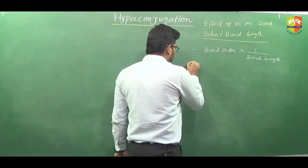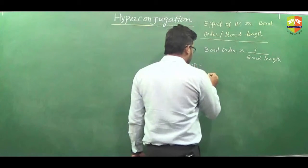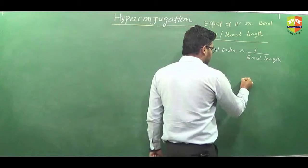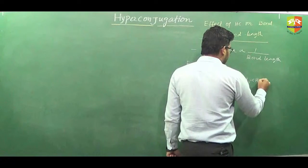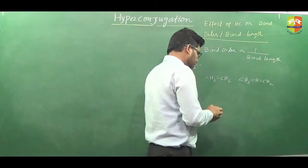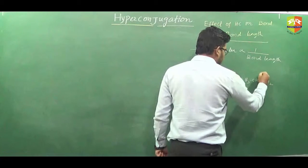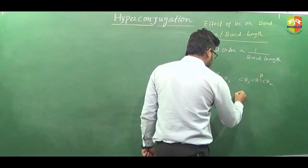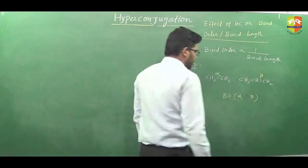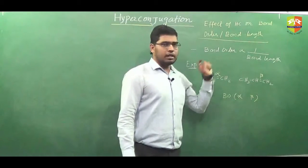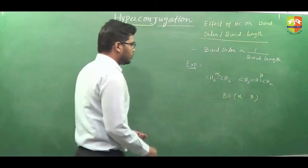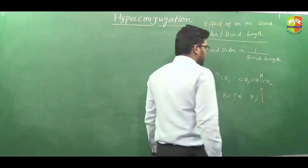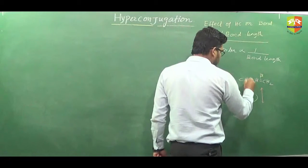For example, we will try to explain this with one example. Suppose we have to compare the bond order of the carbon-carbon double bond in one molecule with the carbon-carbon double bond in another. If we call them alpha and beta, we have to compare the bond order of alpha and beta, and from that you can get bond length also. To understand this comparison, we will try to draw the hyperconjugative structure.